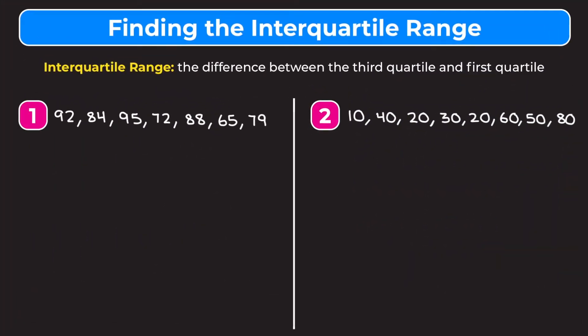In this video we're learning how to find the interquartile range. The interquartile range is the difference between the third quartile and the first quartile. The third quartile is the median of the second half of the data, and the first quartile is the median of the first half of the data. I'll show you what that means once we do some examples.